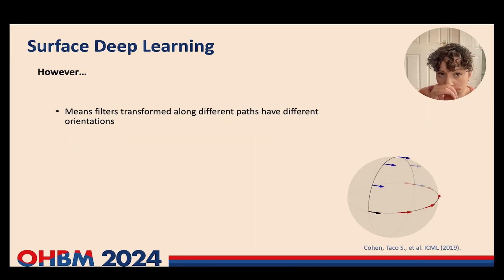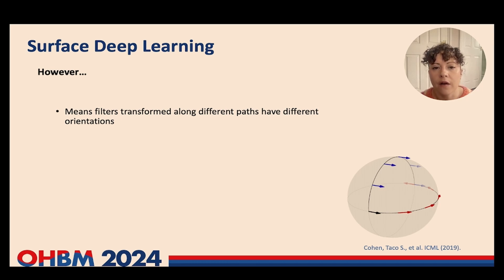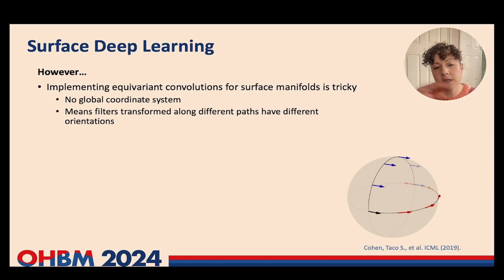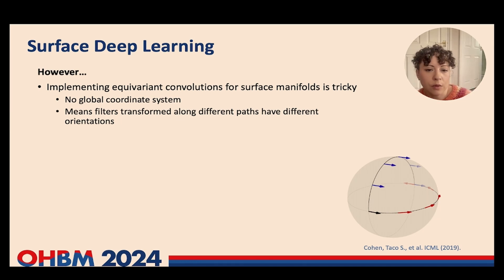If we try and translate the convolutional kernel operation to surfaces, we run into new problems. Surfaces — or non-Euclidean domains — have no global coordinate system. Unlike 2D or 3D domains where you have X, Y, and Z coordinates, our coordinates change as we move across the surface; we have to work in the tangent plane. This also means that when we transform our filters along different paths, we end up with filters of very different orientations.